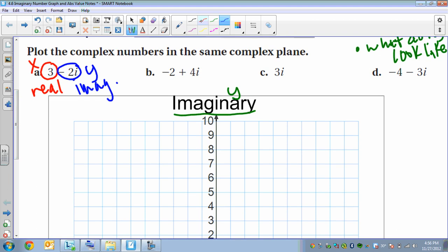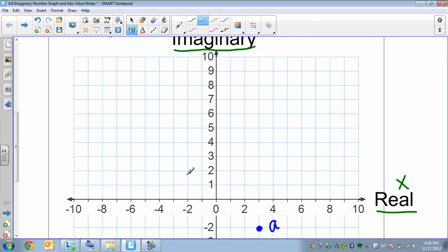Our next one, again, this is the real part. This is the imaginary part. So we graph them kind of separately. So negative 2, 4. So letter B is up there.